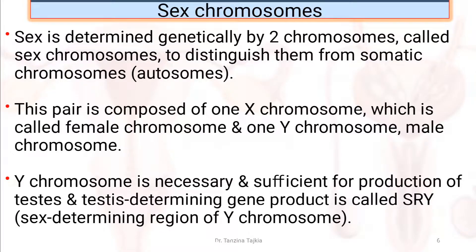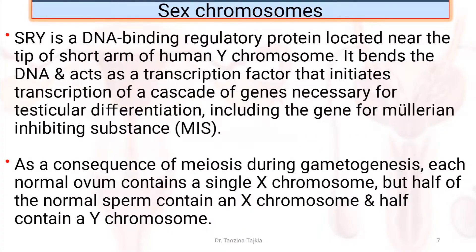The Y chromosome is necessary and sufficient for the production of the testis. The testis-determining gene is called SRY, which means sex-determining region of the Y chromosome. SRY is a DNA-binding regulatory protein located near the tip of the short arm of the human Y chromosome.